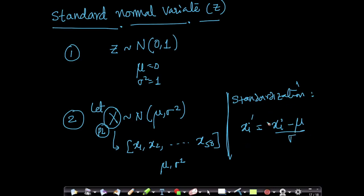So when I do this, I can easily prove to you that xᵢ', if xᵢ is distributed, if xᵢ comes from a normal distribution with mean μ and variance σ², my xᵢ' will come from N(0,1) or my xᵢ' is basically a standard normal variate.